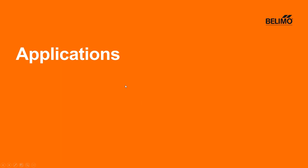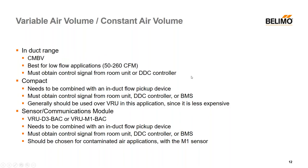Now I've given an overview of the products — let me touch on some of the applications where you'll most likely see them. Probably the most common application is either variable air volume or constant air volume. Starting with the induct range, which is the smallest of the three, we have the CMBV range, best for low flow applications — around 50 to 260 CFM. An important thing to note is that it needs to obtain the control signal from a room unit or DVC controller; even though it can sense duct flow, it still needs a set point from something else.